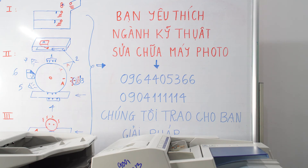Ngoài ra, mã báo lỗi còn báo cho chúng ta biết máy đang gặp những vấn đề về điện áp, về bộ xử lý, về những động cơ, linh kiện. Như vậy, làm cách nào để chúng ta phân biệt được và xử lý được triệt để những mã báo lỗi?